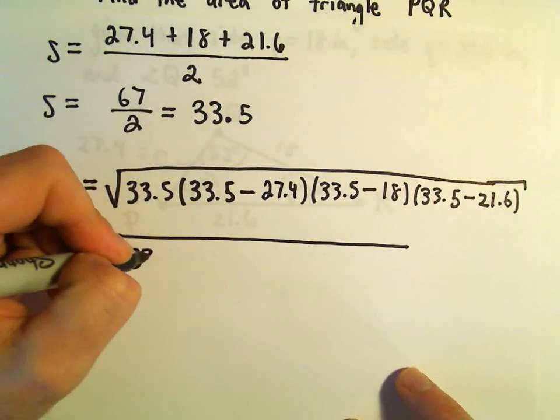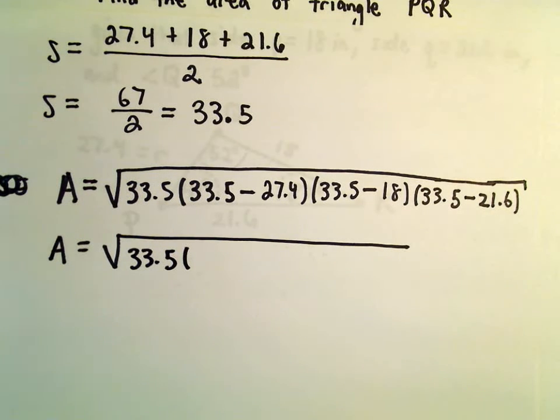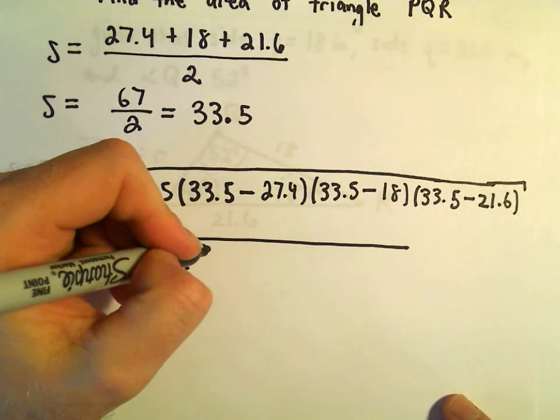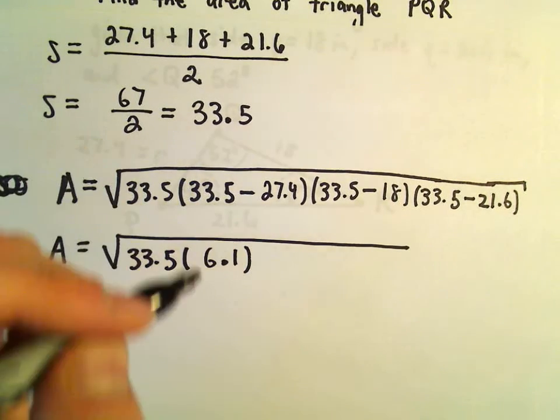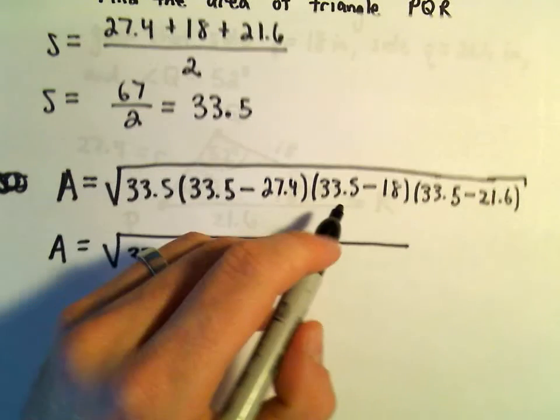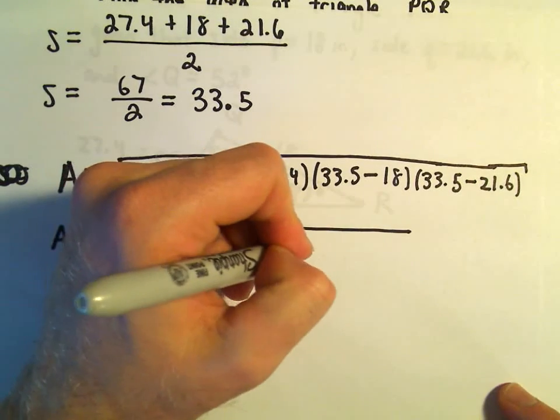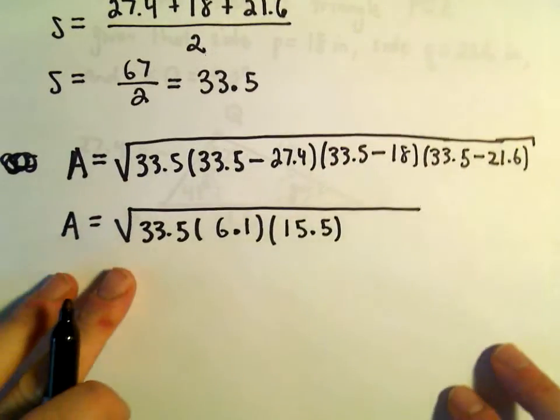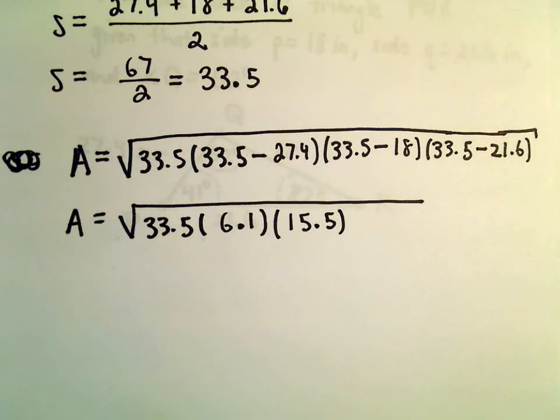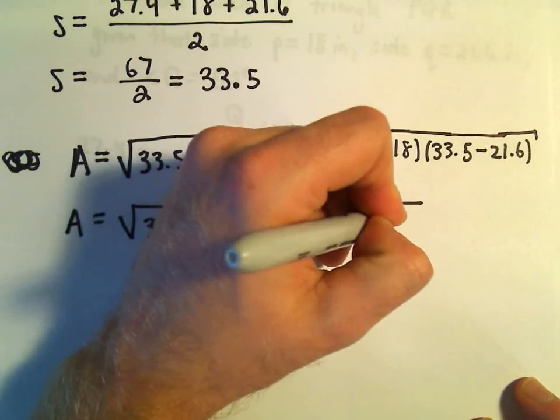Nothing worse than that. So 33.5, if we take 33.5 and subtract 27.4, we should just get 6.1. So 33.5 minus 18, that's just going to give us 15.5. And then if we do 33.5 and subtract away 21.6, that's just going to give us 11.9.